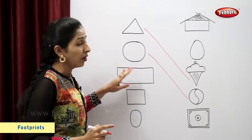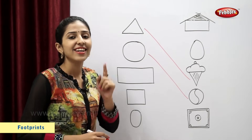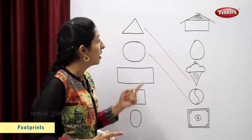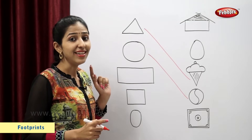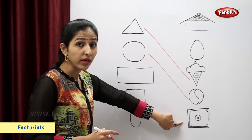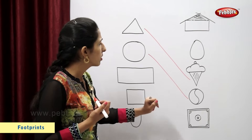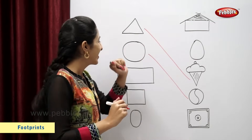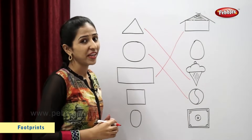Now, you tell me students, which is this shape? Correct. This is a rectangle. Now, you tell me which is the figure similar to this rectangle? Carom board? No. Then... hut. Very good.